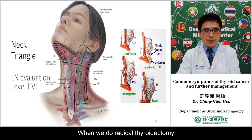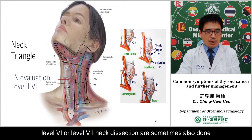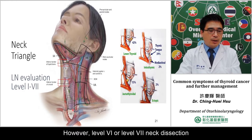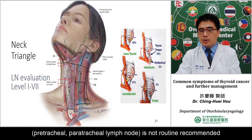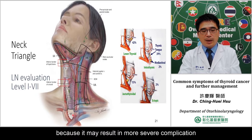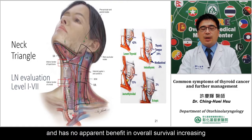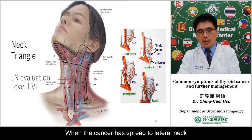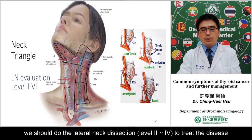When performing thyroidectomy, we may also do level 6 or level 7 neck dissection. However, level 6 and 7 neck dissection is not routinely recommended because it may cause more severe complications without significant improvement in overall survival rate. When thyroid cancer spreads to the lateral neck, we should perform lateral neck dissection at levels 2 to 4.